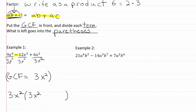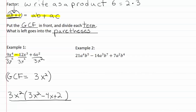Twelve divided by three is four, and x to the third divided by x squared leaves us with just a plain x. And then our last term, we've got a plus sign. Six divided by three leaves us with two, and x squared divided by x squared is just one, so we can just leave this as a plain two. So our factored form of our expression is 3x²(3x² minus 4x plus 2).